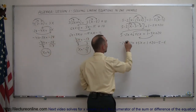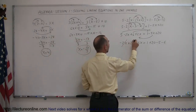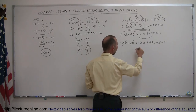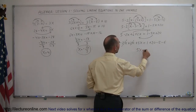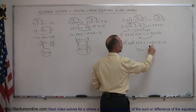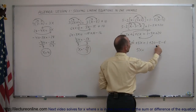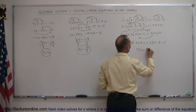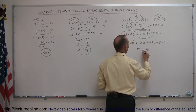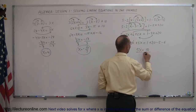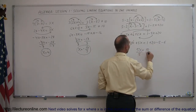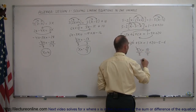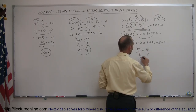Now we can see that the minus 2x and the plus 2x cancel out, leaving 5x on the left side. On the right side, 20 minus 5 minus 6 is 9, plus 1 is 10. Dividing both sides by 5 — 5 and 5 cancel out — we get x equals 2.